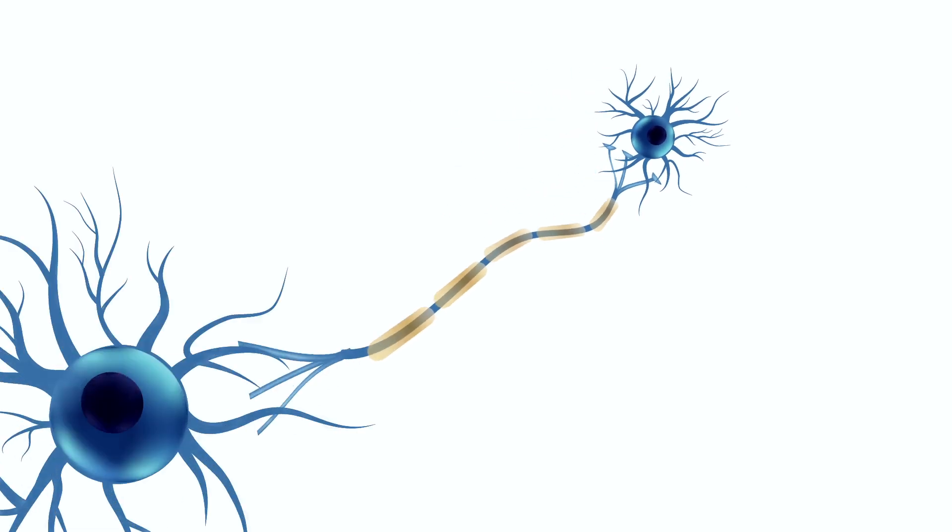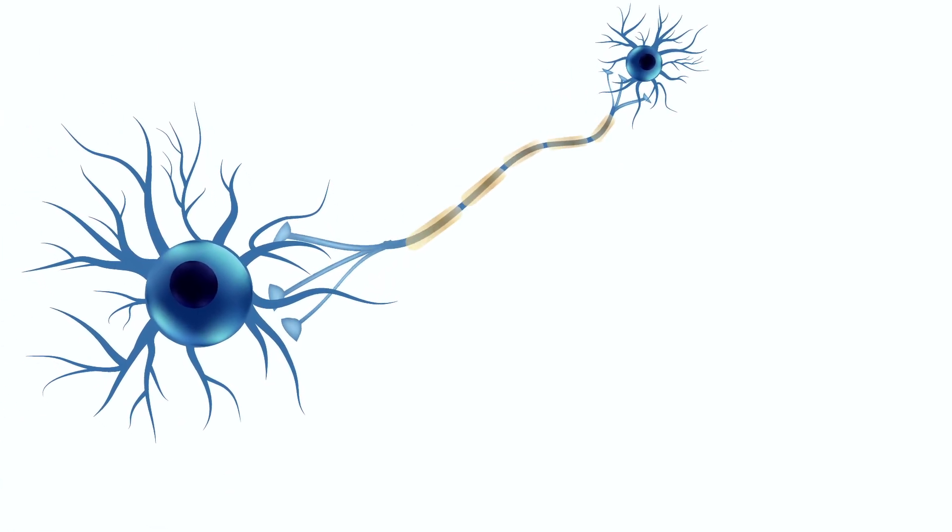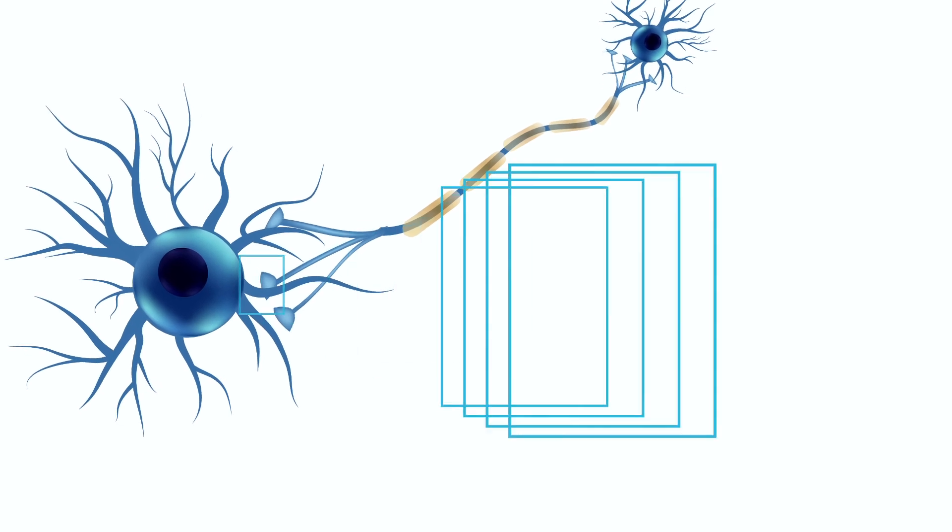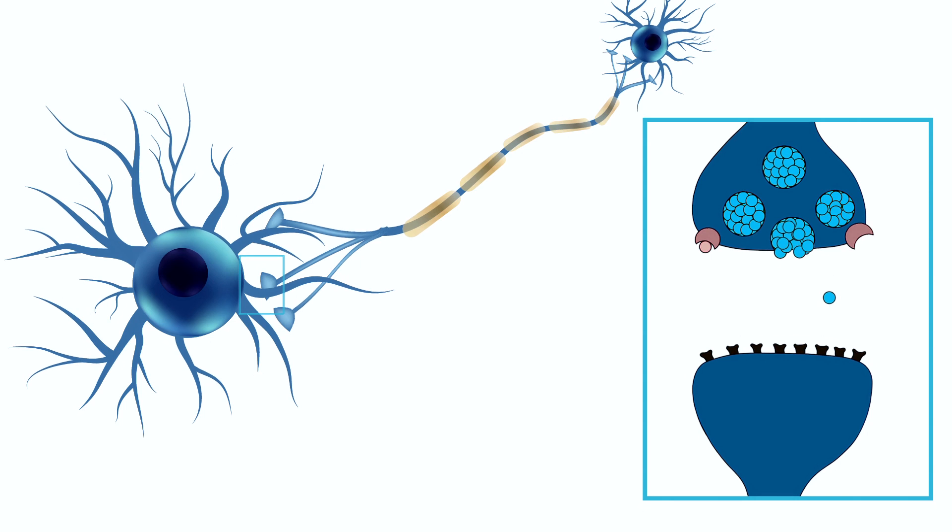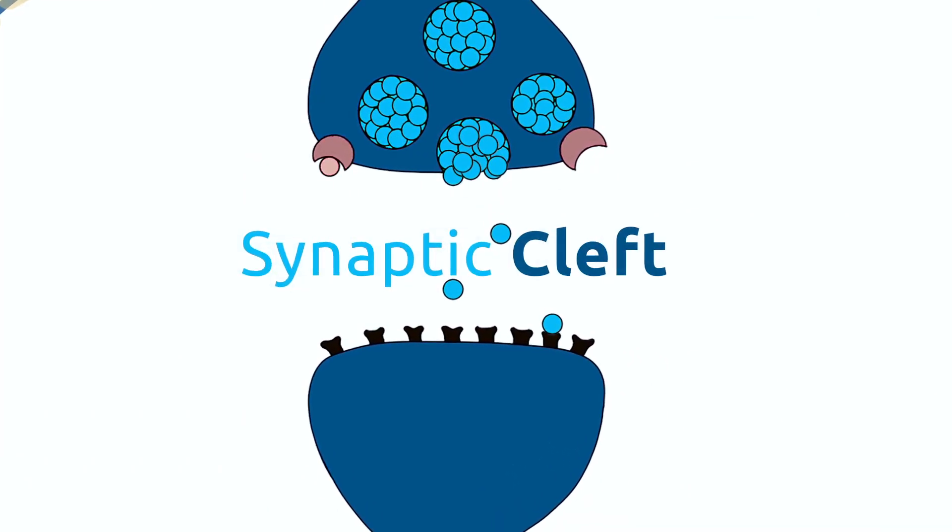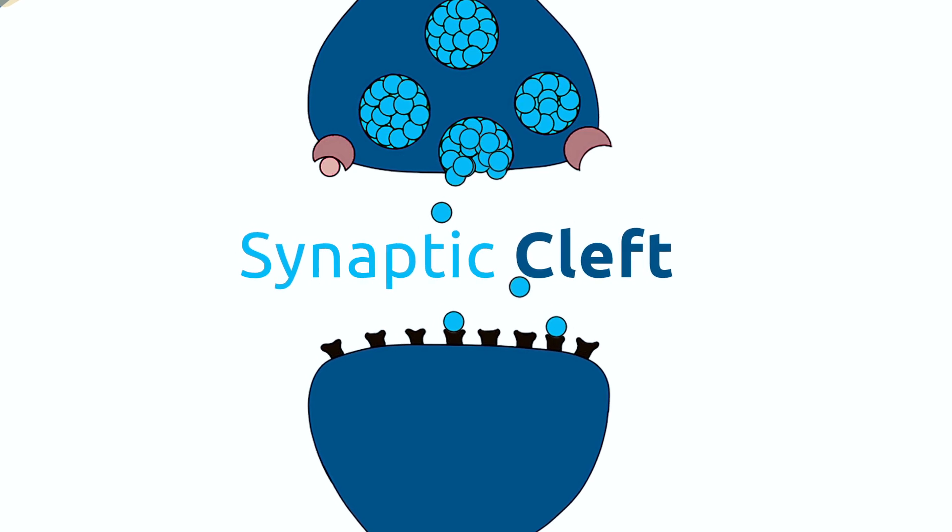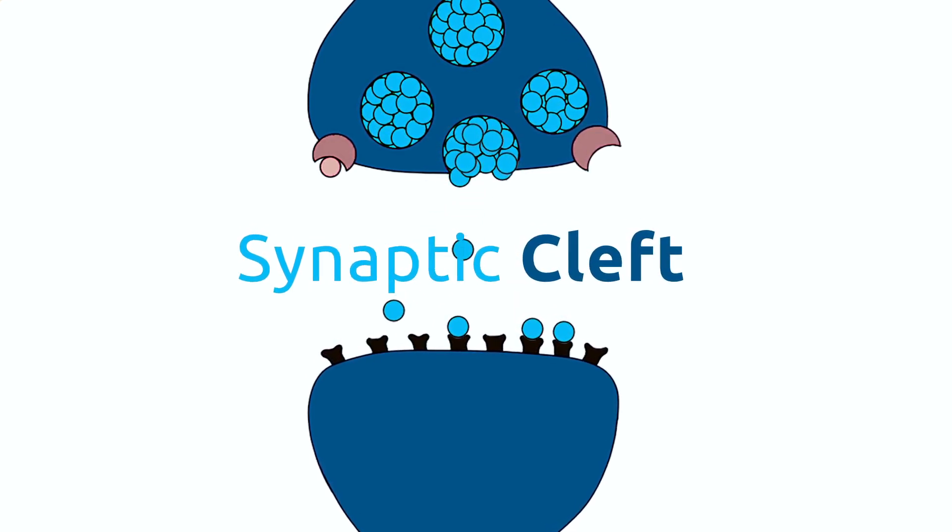In order for neurotransmitters to be released from neurons in the brain, an electrical impulse must be generated. This electrical impulse allows for neurotransmitters to cross the small gap that separates each individual neuron, called the synaptic cleft, which leads to neurotransmitters from one neuron binding to receptors on another neuron.